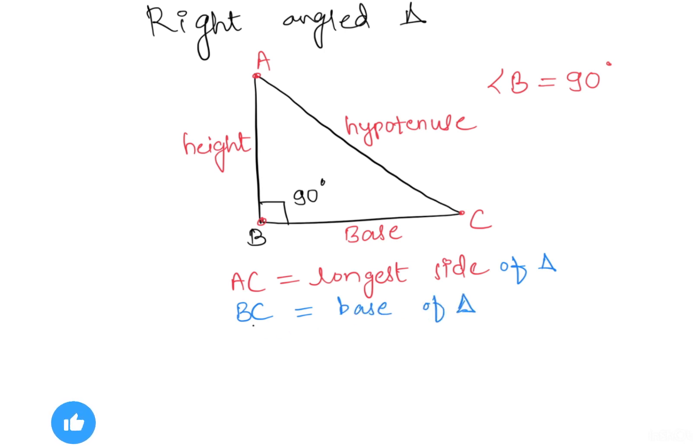And here AB is perpendicular to side BC, so it is the height of the triangle. According to Pythagoras theorem, AC squared equals AB squared plus BC squared.